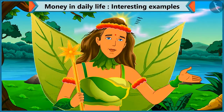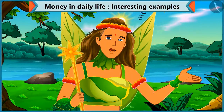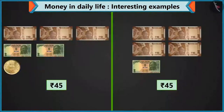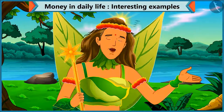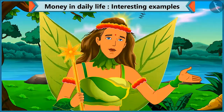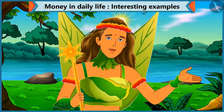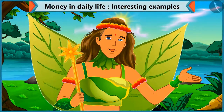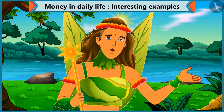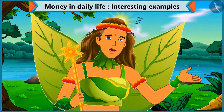So children, you saw how we made 45 rupees in 2 different ways? You can also think of other ways. So, let's see what Chi Chi is doing next.